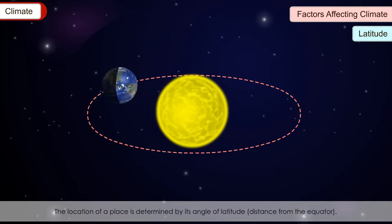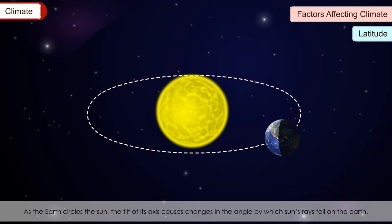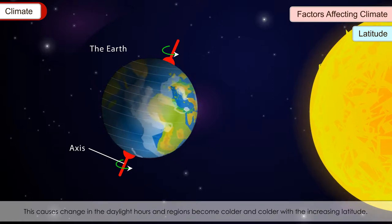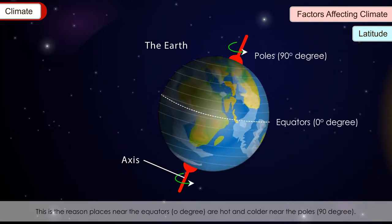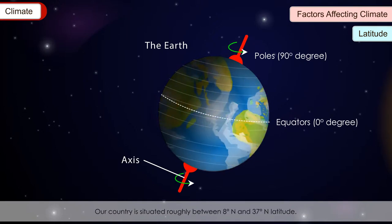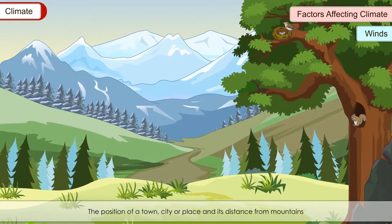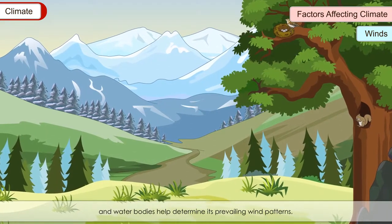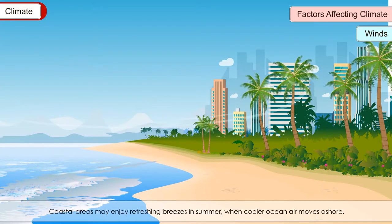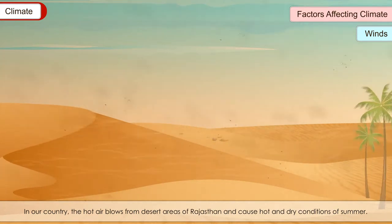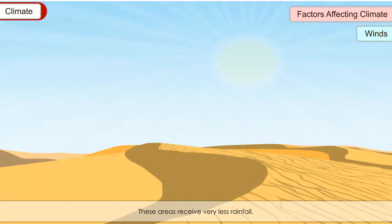Latitude: The location of a place is determined by its angle of latitude. As the earth circles the sun, the tilt of its axis causes changes in the angle by which sun's rays fall on the earth. This causes changes in daylight hours, and regions become colder with increasing latitude. Places near the equator are hot and colder near the poles. Our country is situated roughly between 8 degrees north and 37 degrees latitude. Coastal areas may enjoy refreshing breezes in summer when cooler ocean air moves ashore. The hot air from desert areas of Rajasthan causes hot and dry conditions in summer, and these areas receive very less rainfall — this is the typical desert climate.